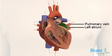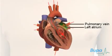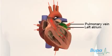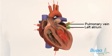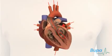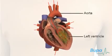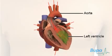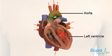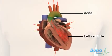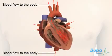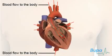The left atrium receives blood that contains oxygen from the lungs via the pulmonary veins. This blood then passes into the left ventricle, which pumps it into the aorta. From the aorta, the blood is passed to the different parts of the body.